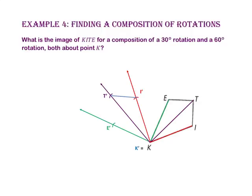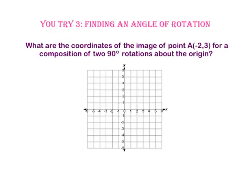Finally, let's connect I prime to T prime, T prime to E prime, E prime to K prime, and K prime to I prime. We have just rotated polygon KITE 90 degrees to create polygon K prime, I prime, T prime, E prime.